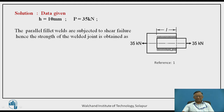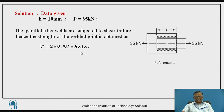These are the two plates and these are the parallel fillet welds which are subjected to a load of 35 kN. So P = 35 kN, the size of the weld H = 10 mm, and allowable shear stress is given. To design this weld joint, it is subjected to shearing action. The strength of this welded joint is obtained as the shearing area of one weld, which is 0.707 × H × L × allowable shear stress. This is the strength of one fillet.